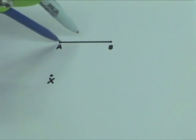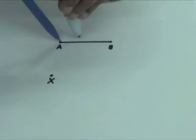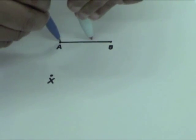Use a compass. Place the compass point on A and adjust the compass width to the length of AB.